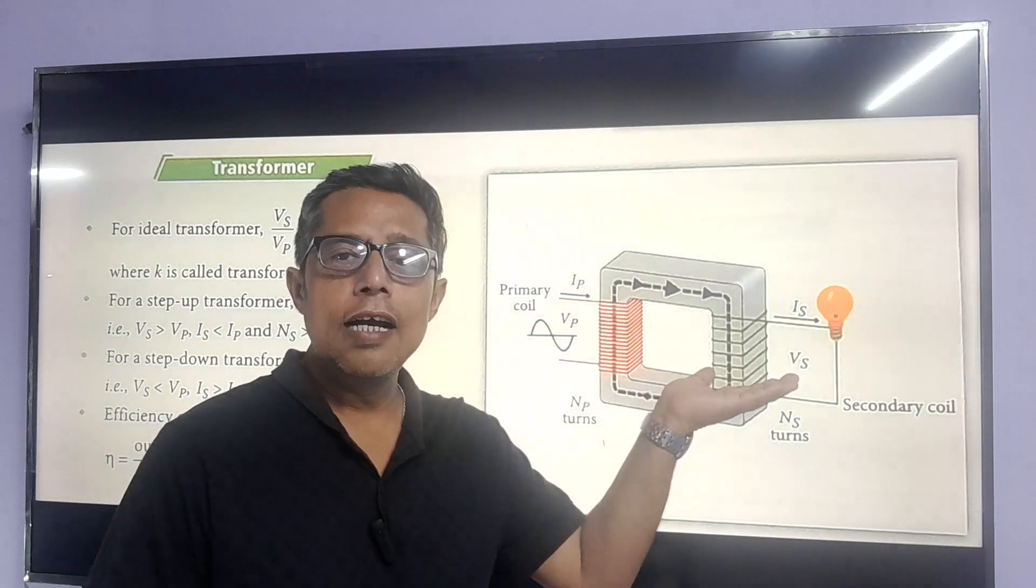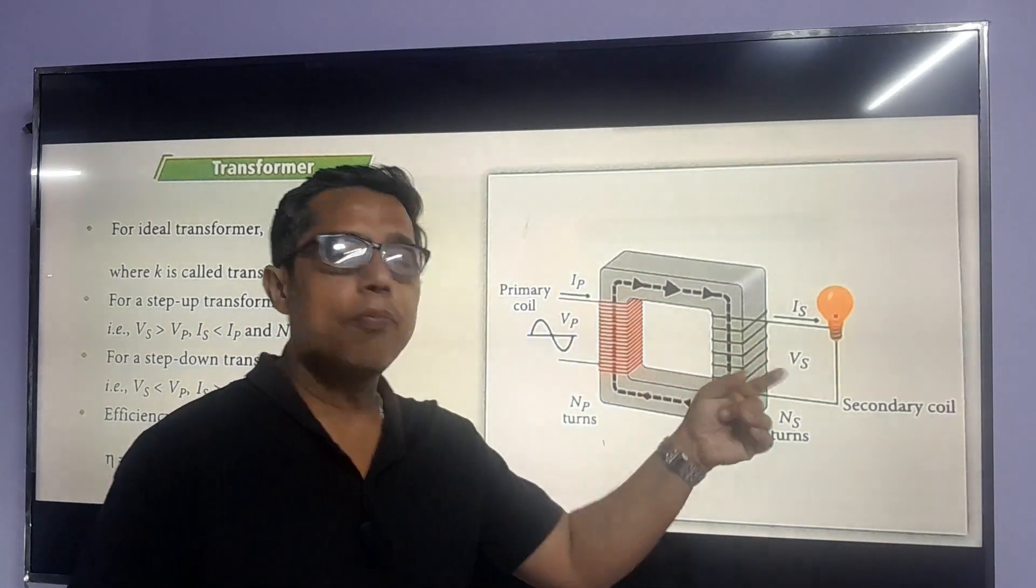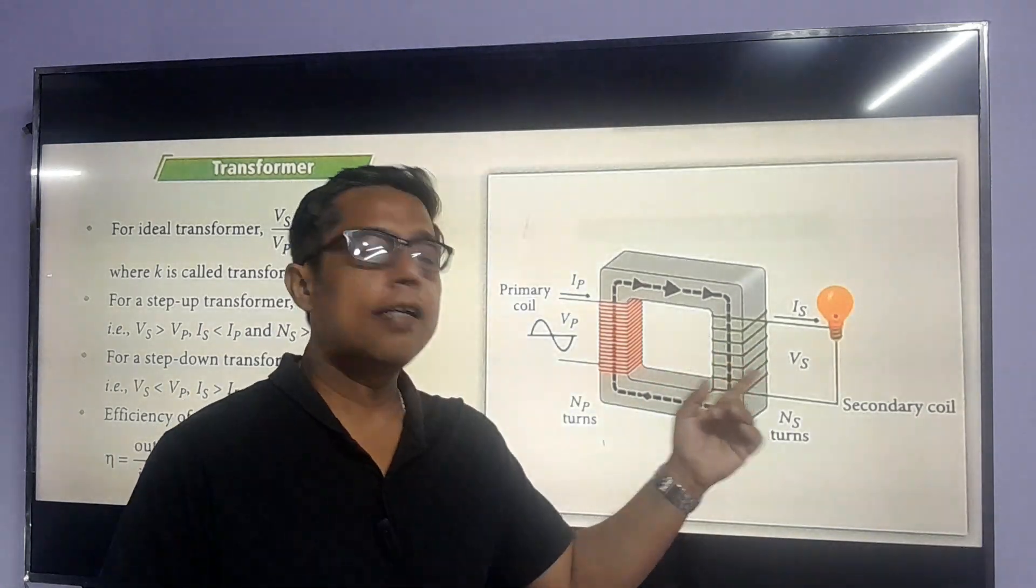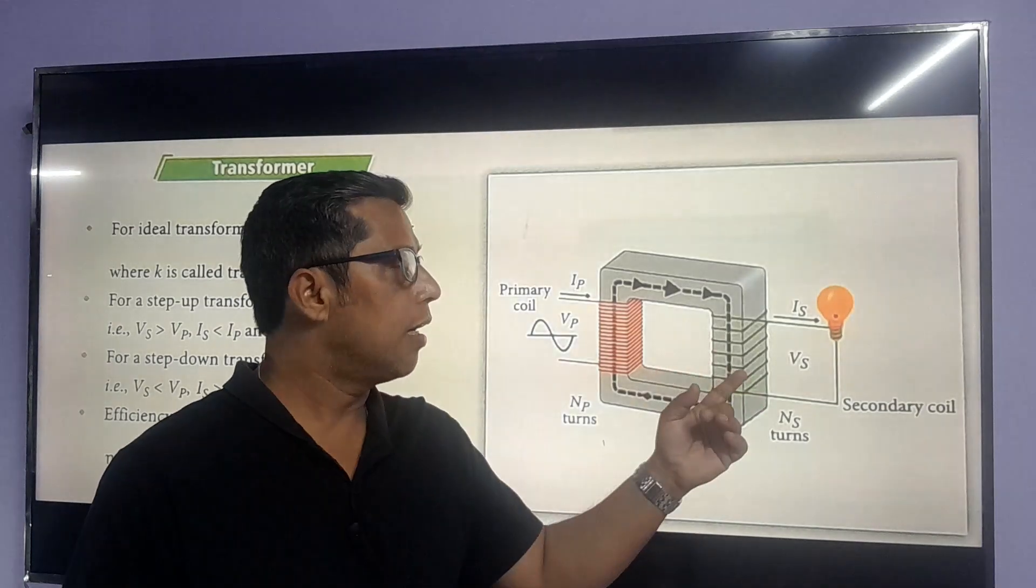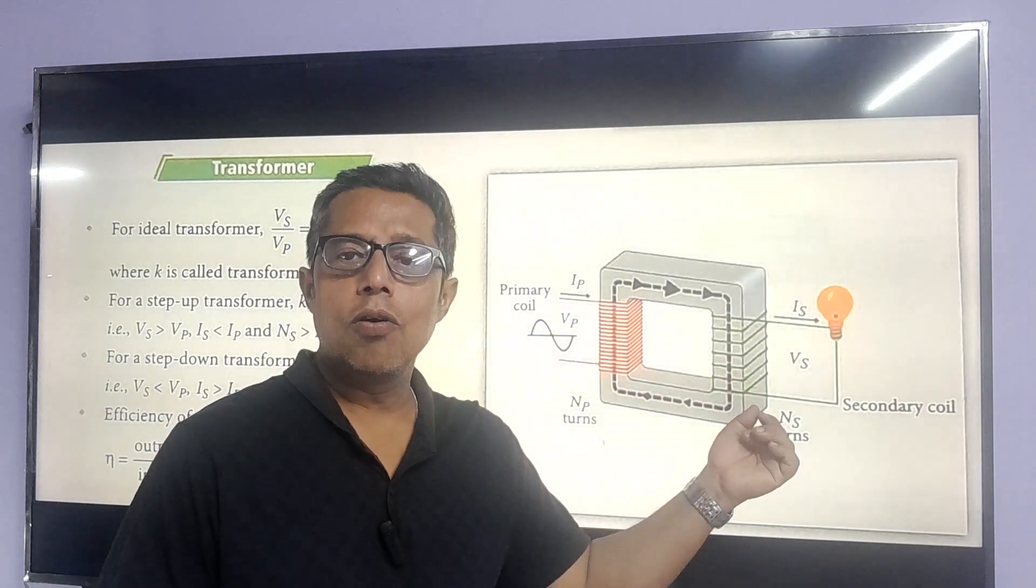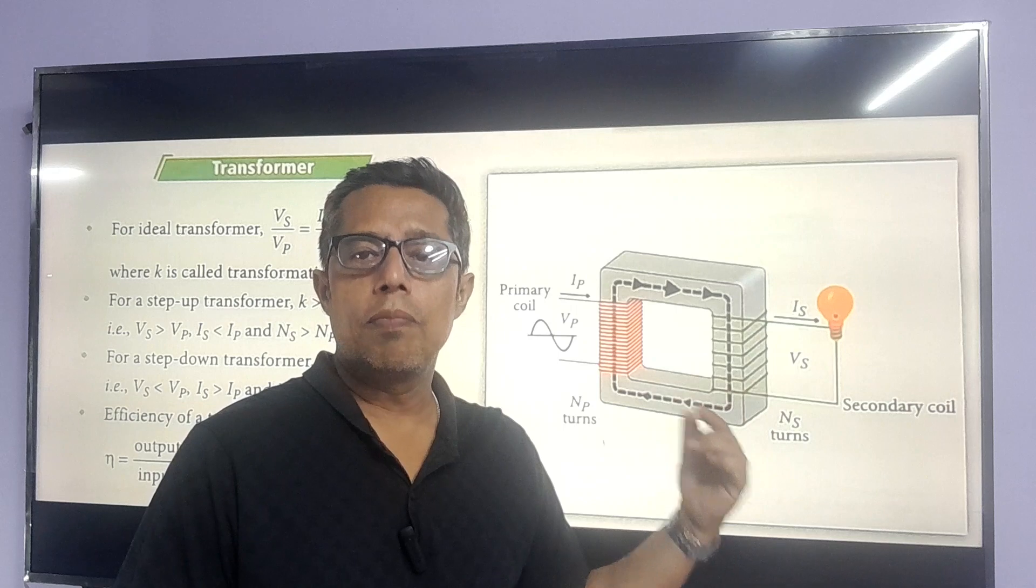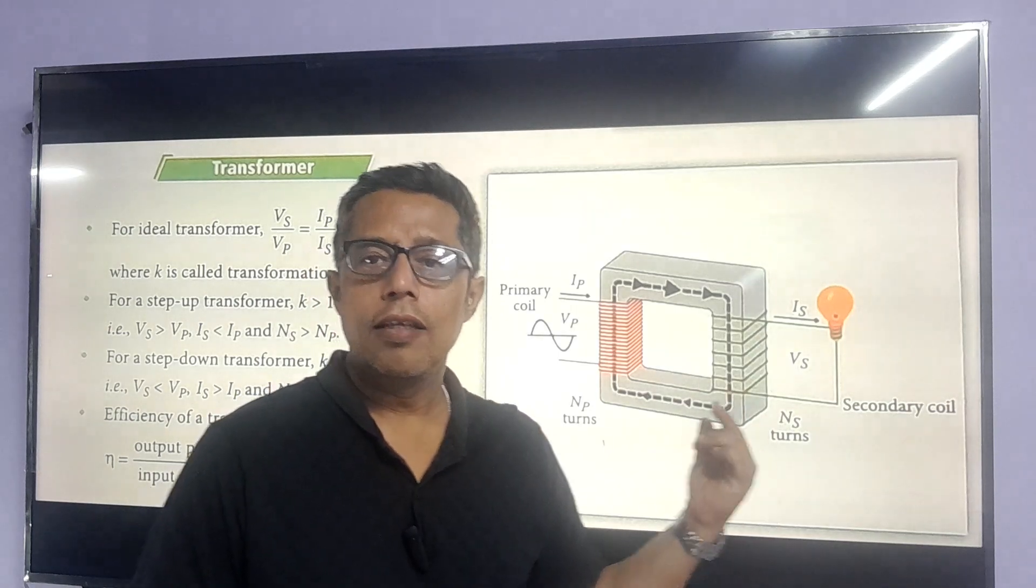We can increase the induced EMF by increasing the number of turns in the secondary coil, or we can reduce the EMF in the secondary coil by decreasing the number of turns in the secondary coil. Okay, thank you.